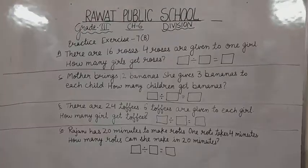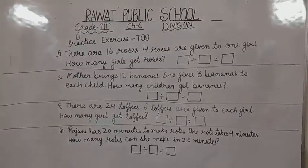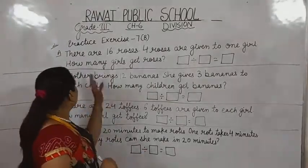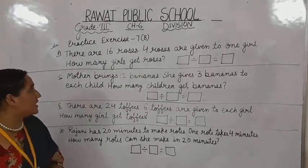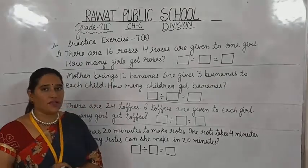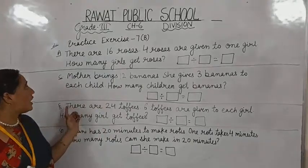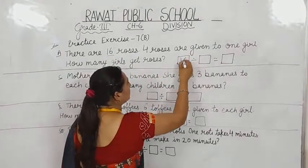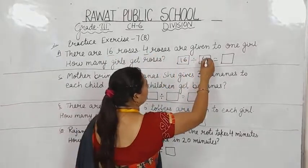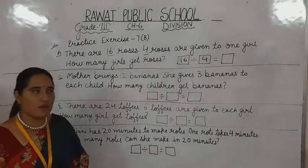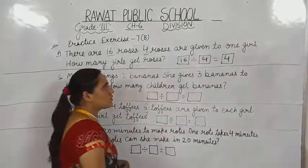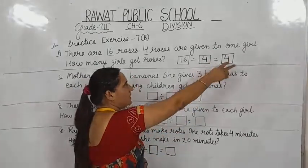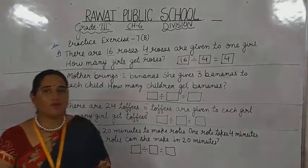Now in Practice Exercise 7b, question number 2a: there are 16 roses. Four roses are given to one girl. How many girls get roses? We write 16 in the first box and 4 in the second box. When we divide 16 by 4 our answer is 4 — because four fours are 16. So four girls get roses.